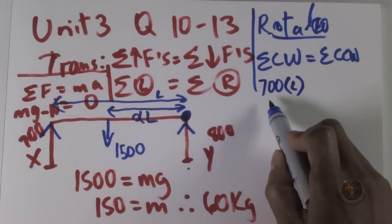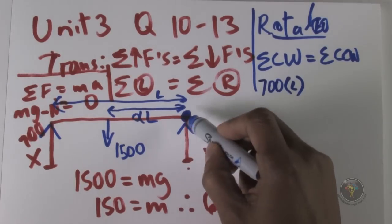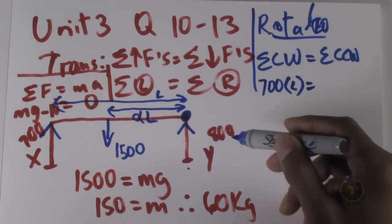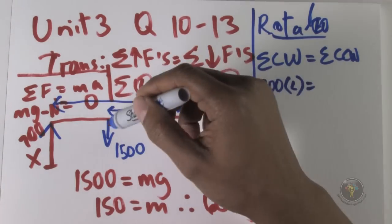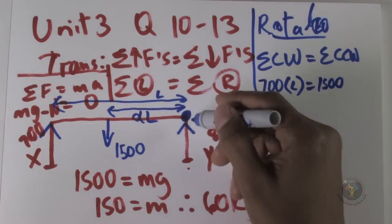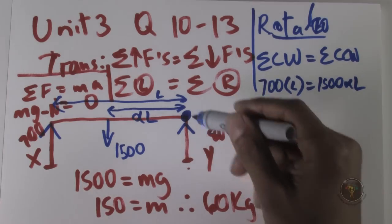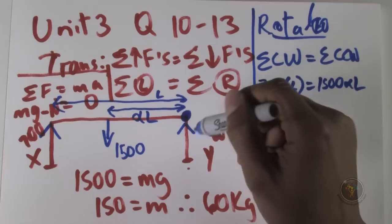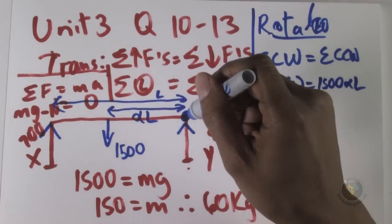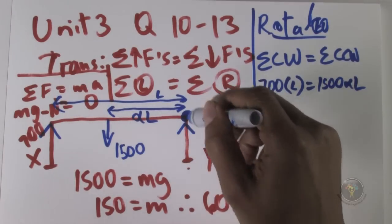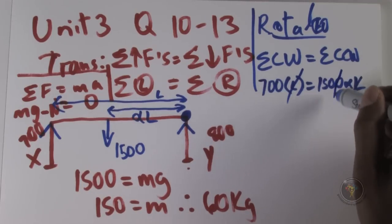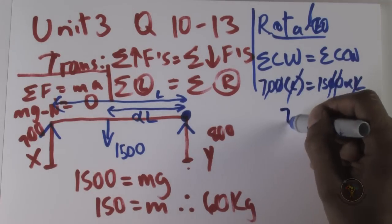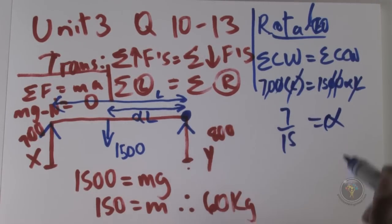Now sum the counterclockwise torques. There is only one force in the counterclockwise direction: the 1500 newtons acting at the center of mass. Its counterclockwise torque is 1500 times alpha·L. Note the force at y (the pivot) is ignored — it contributes zero torque. Setting the equations equal: 700·L = 1500·alpha·L. The L's cancel, giving alpha = 700/1500 = 7/15. This simple application of two rules solves any torque force problem.